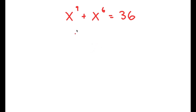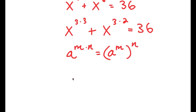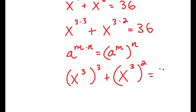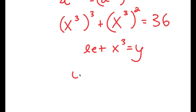In this problem, I have x to the power of 9 plus x to the power of 6 is equal to 36. I'm going to rewrite this as x to the power of 3 times 3 plus x to the power of 3 times 2 equals 36. Using the rule that a to the power of m times n equals a to the power of m to the power of n, this becomes x to the power of 3, cubed, plus x to the power of 3, squared, equals 36. Letting y equal x to the power of 3, I get y cubed plus y squared equals 36.